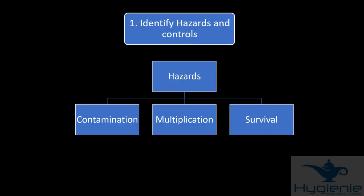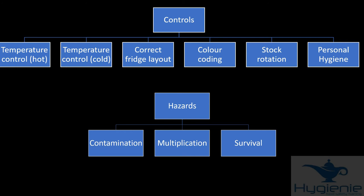So those are our three hazards from principle one: contamination, multiplication and survival. Now let's take a look at controls. Controls will include temperature controls such as cooking or cold temperatures of the fridge. It stops it growing. Correct fridge layout to prevent contamination, colour coding, stock rotation and personal hygiene. They're all there to prevent hazards of contamination, multiplication and survival.